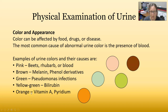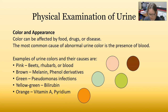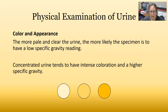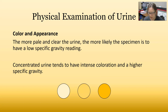A really striking orange color — not just an amber color — could be from vitamin A or from pyridium, which is a drug sold over the counter for urinary tract infections. It has a dye color to it; it's a very intense orange. The more pale and clear the urine, the more likely the specimen is to have a low specific gravity, meaning it's very dilute. Concentrated urine tends to have an intense color, all the way up to amber, and a higher specific gravity.